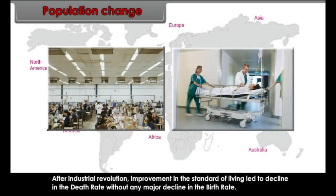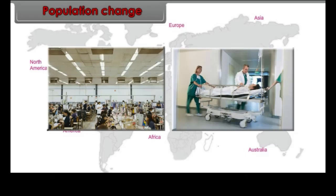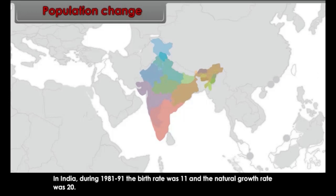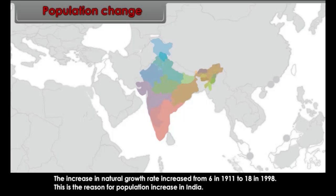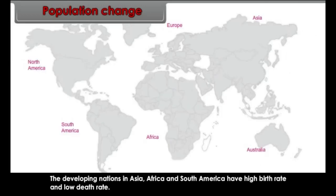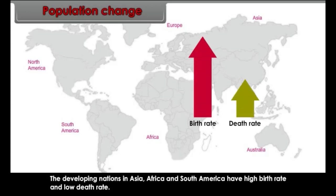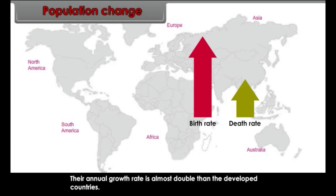Birth rate is defined as the total number of births per thousand population. Death rate is the total number of deaths per thousand population. Natural growth rate (NGR) is the difference between birth rate and death rate. Population increase in the world is mainly due to rapid increase in the natural growth rate. After the industrial revolution, improvement in the standard of living led to a decline in death rate without a major decline in birth rate, increasing the natural growth rate. Developing nations in Asia, Africa and South America have high birth rates and low death rates, with annual growth rates almost double that of developed countries.